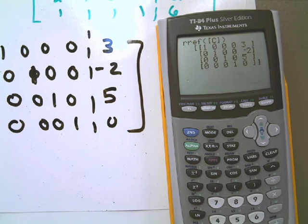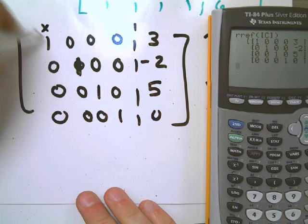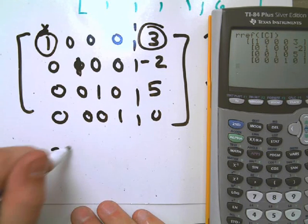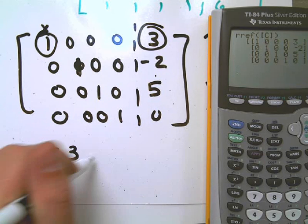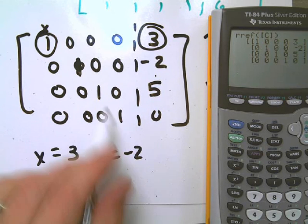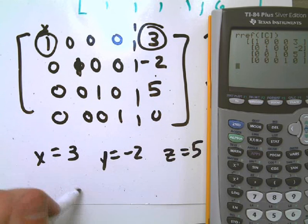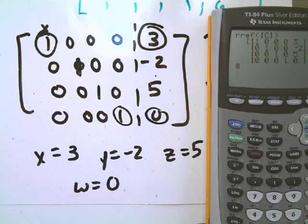Which is a quick way of telling us, then, that X is equal to 3, Y is equal to negative 2, Z is equal to 5, and W must be 0. How handy is that? Thank you.